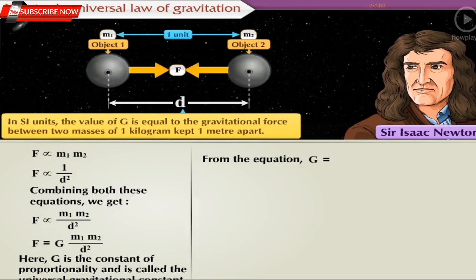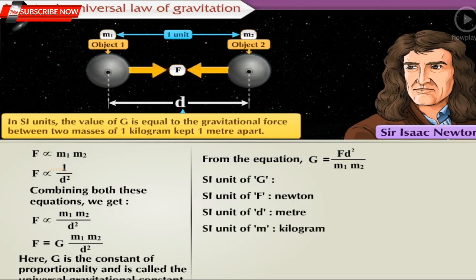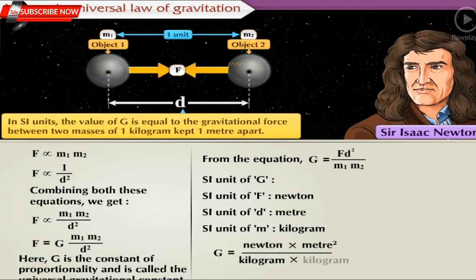G is equal to F into D-square upon M1 into M2. From this equation, let us find the SI unit of the Universal Gravitational Constant. For this, let us first write the units of force F, distance D, and mass M. Therefore, the SI unit of G is equal to Newton into meter square upon kilogram into kilogram. Thus, the SI unit of G is equal to Newton meter square per kilogram square.